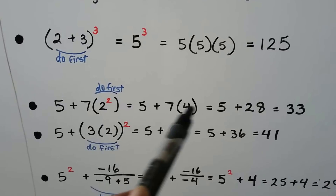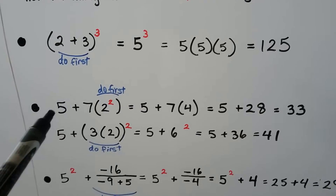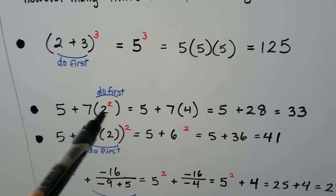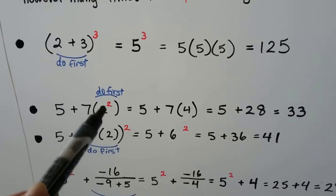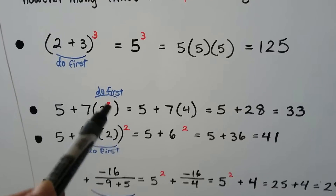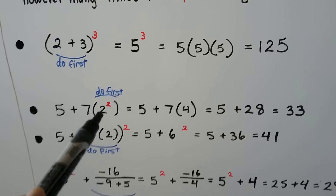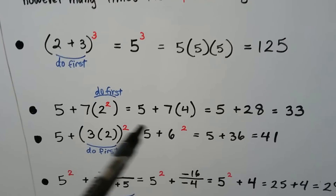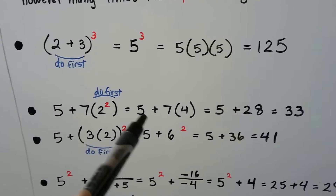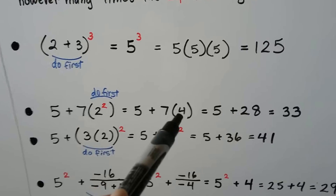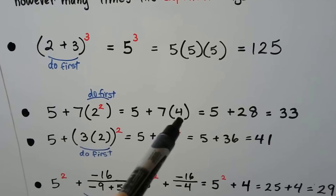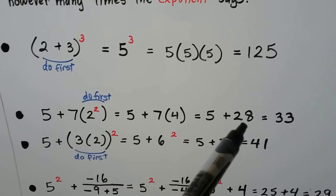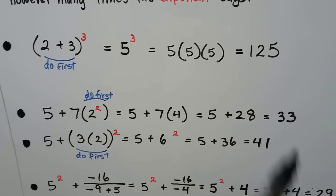For this next one, we have 5 plus 7 times 2 squared. We would do the 2 squared first: 2 times 2 is 4. So that means we have 5 plus 7 times 4, which means 5 plus 28, which means 33.